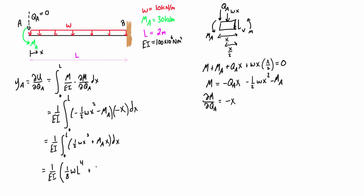This guy here is going to go to one half X squared, so this becomes one half MA X squared. And again we can just substitute in that L right away, so we get one half MA L squared.